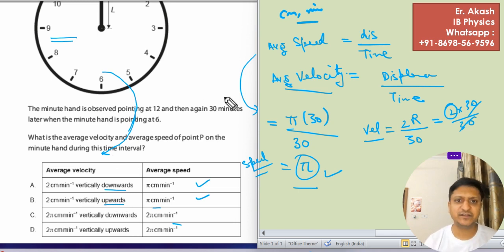So in this question, when the clock was moving towards 6 from 12 to 6, it is moving like this. So the vertical component is always towards the downwards.